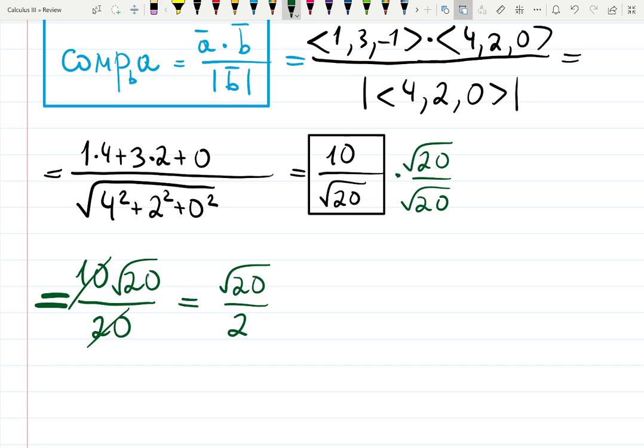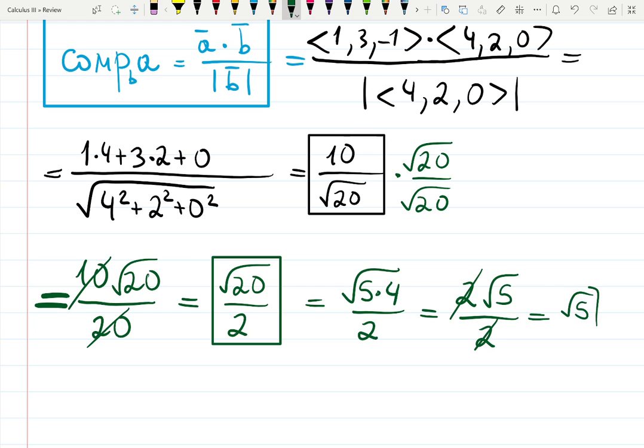This is an okay answer, or you can remember that 20 is 5 times 4, right? So it's going to be square root of 5 times 4 over 2. Square root of 4 is 2, then it's going to be 2 square root of 5 over 2. 2 cancels out and the final answer is the square root of 5.